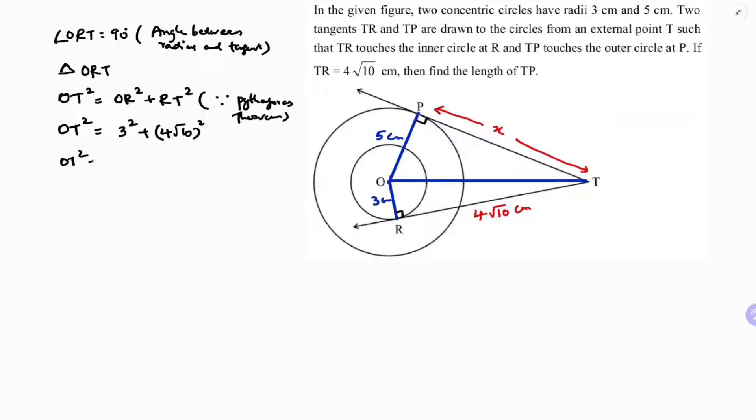So OT², 3² is 9, 4² is 16, (√10)² is 10. OT² is 169.